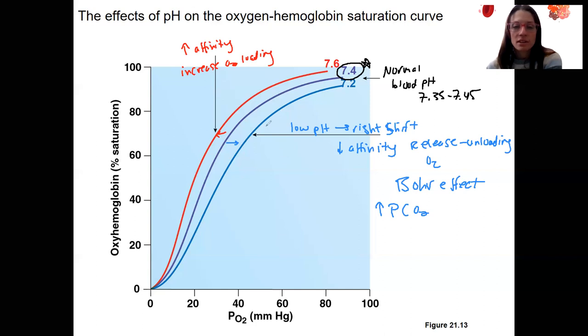This is very relevant for our exercising muscles. Releasing more oxygen, this right shift, this is the Bohr effect, can either be due to low pH or high PCO2.